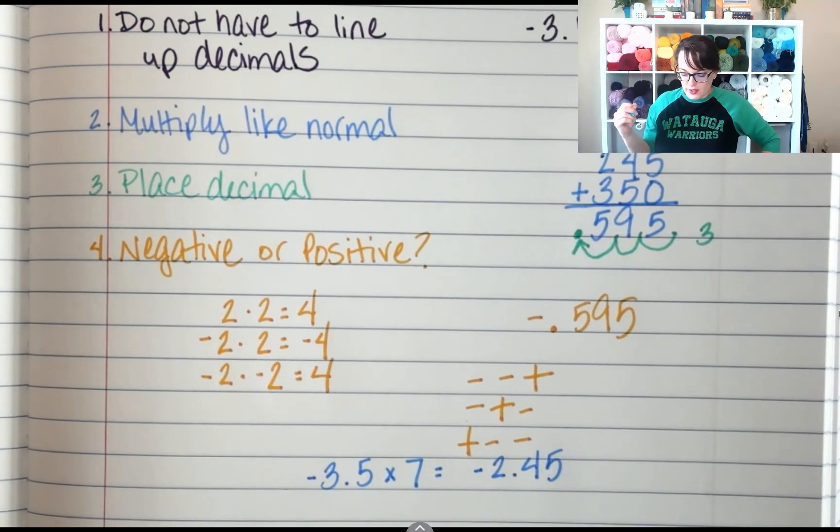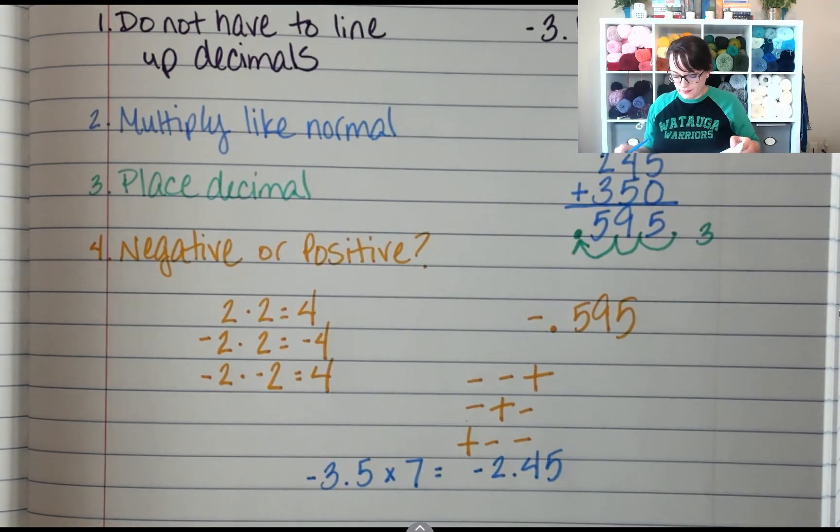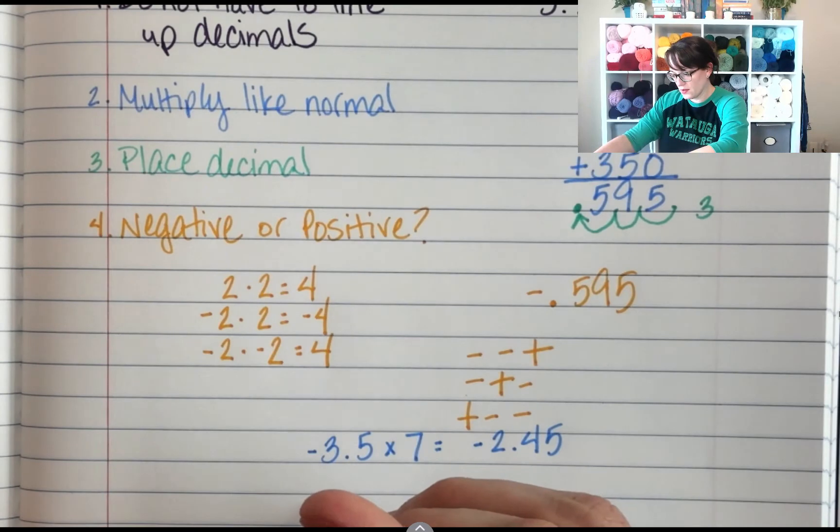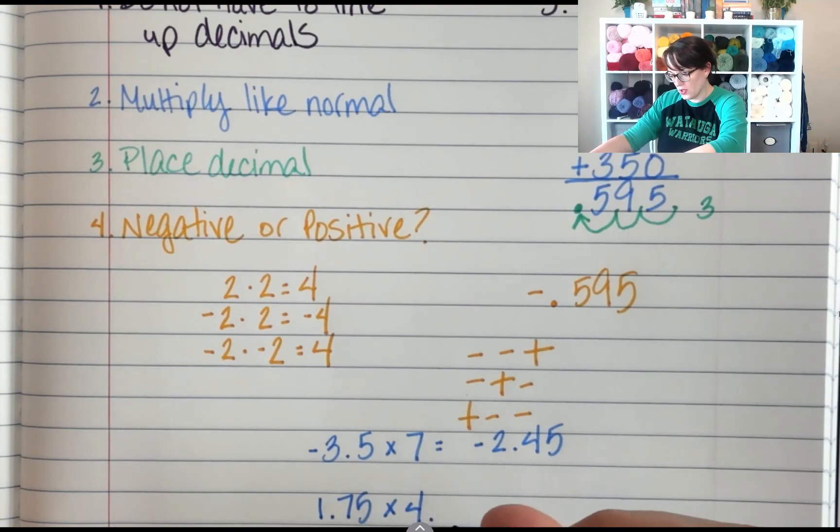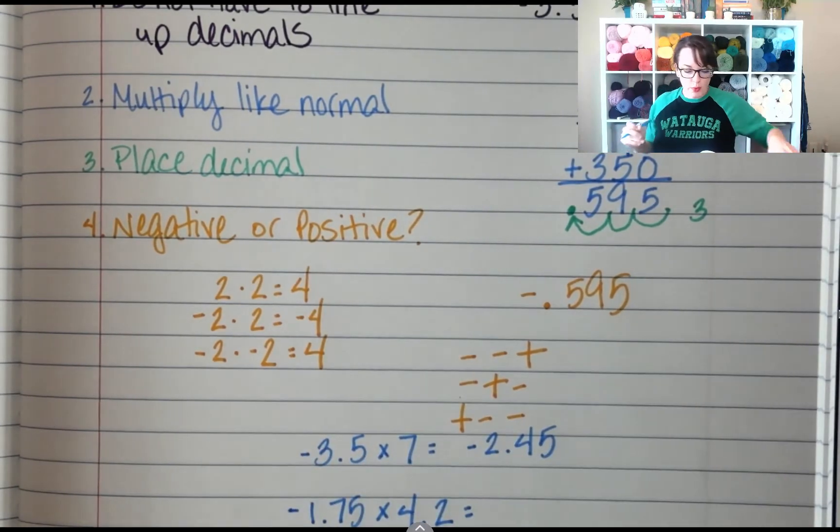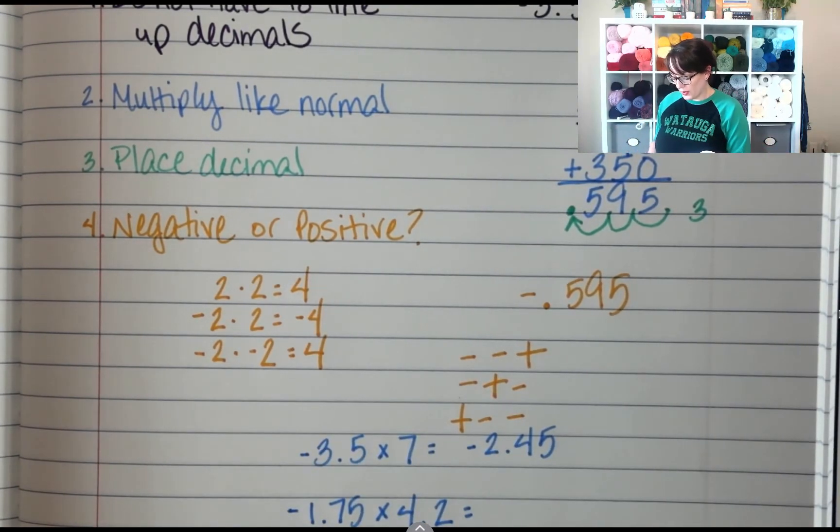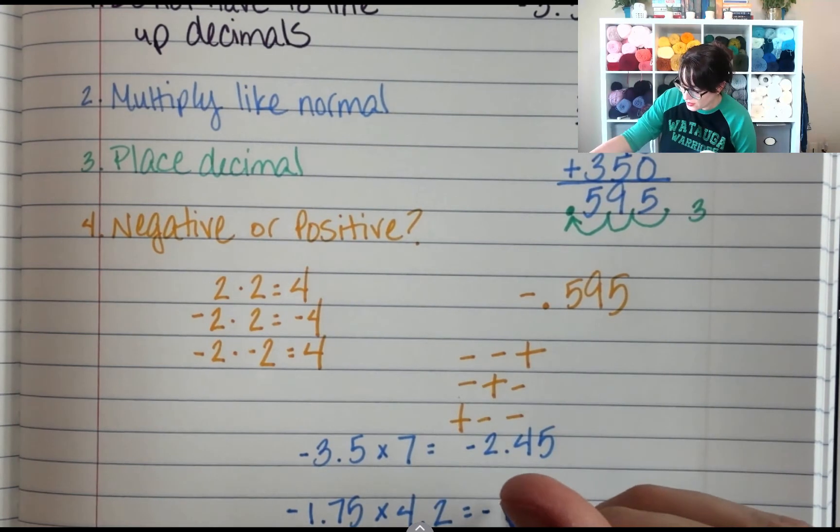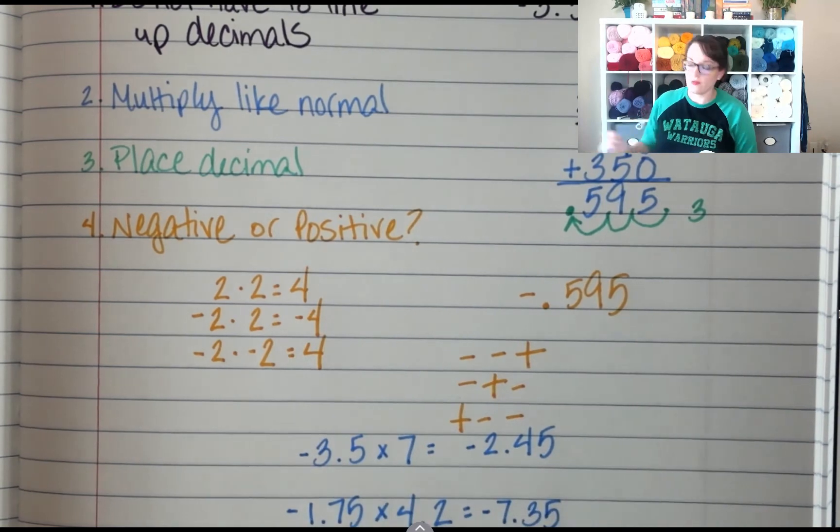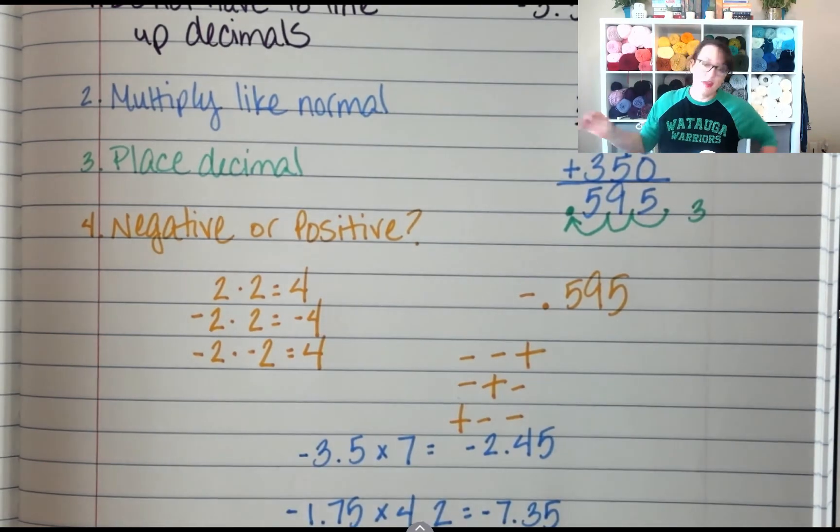Alright, one more. Let's do 1.75 times 4.2. Let's make that negative 1.75. Negative 1.75 times 4.2. You should end up with negative 7.35.